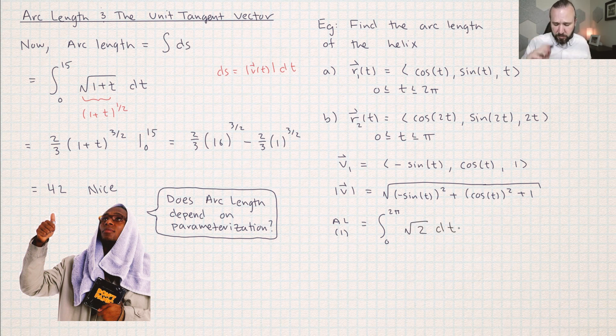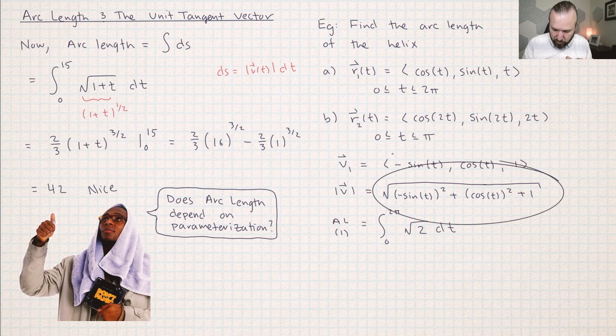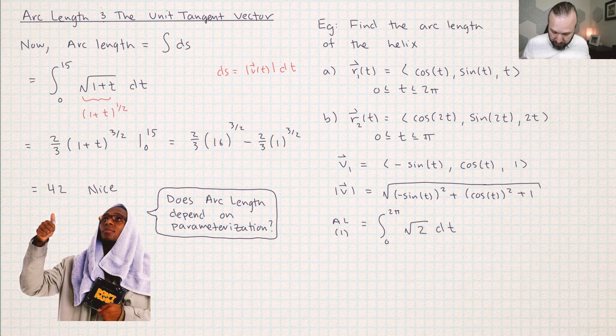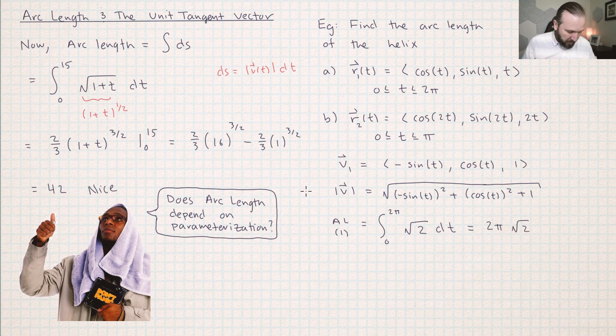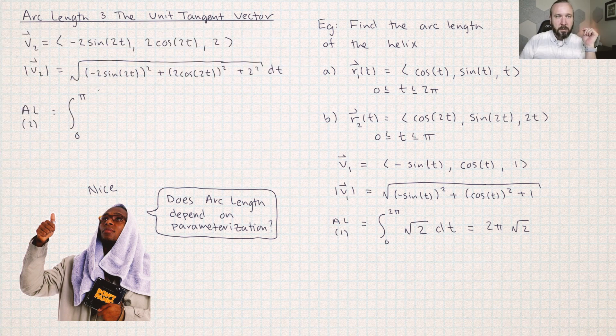So this special time, this particle is moving at a constant speed. Usually you should get a variable there, but this is actually consistent with what CalcPlot3D showed us, which was that the length of that black arrow doesn't change. And the math agrees with us, right? It's the speed is constant here. So I'm getting two pi times the square root of two. I really hope that parameterization number two gives us the same answer.